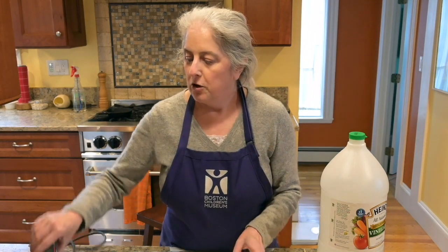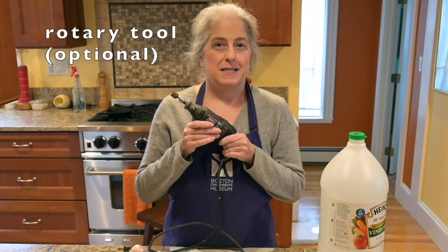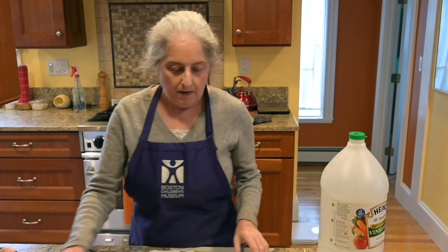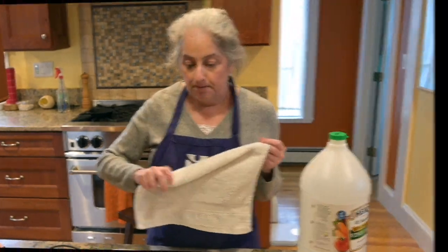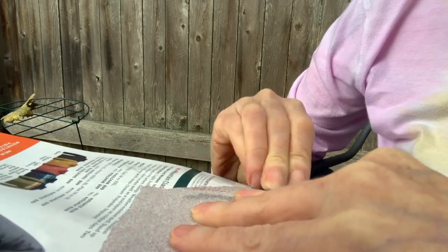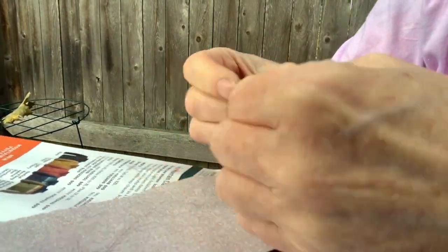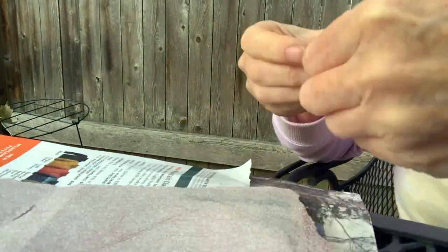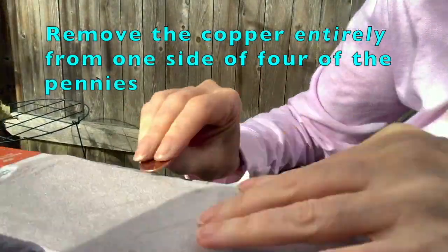Or, if your grown-up has a tool like this one, that makes the process a little easier. You might also want a paper towel or a rag. The hardest part of this whole experiment is preparing the pennies. Pennies made after 1982 are mostly made of zinc and then covered in copper. Use your sandpaper or rotary tool to remove all of the copper from one side of four of your pennies.